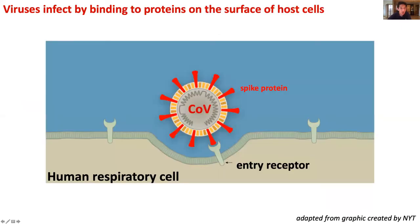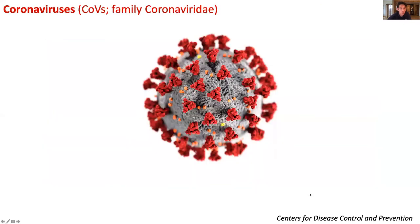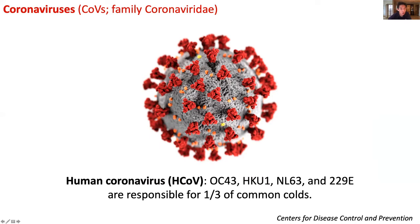For example, a single particle of SARS-CoV-2 uses its spike protein to locate and then productively infect a human respiratory cell. Coronaviruses are not something new — in fact, pretty much every one of us has been infected with a coronavirus before. All four strains of human coronaviruses are responsible for one third of common colds, so you've most likely been infected with a coronavirus before.